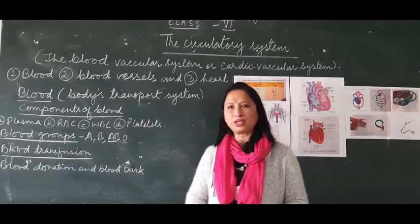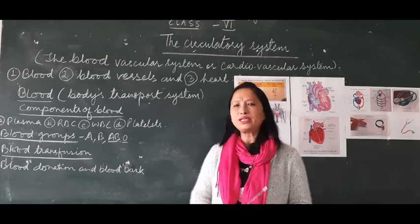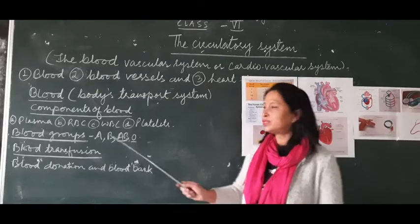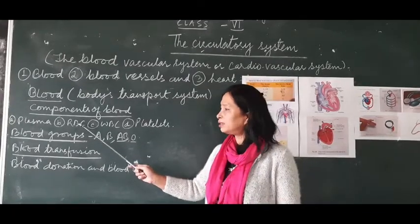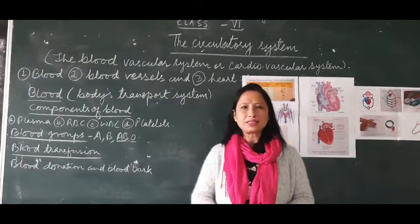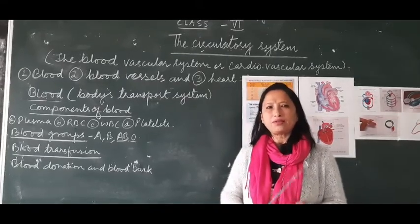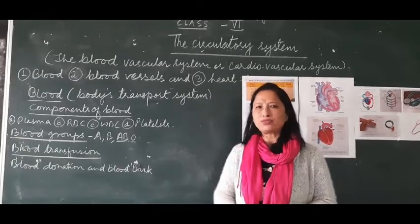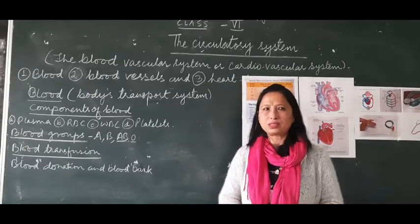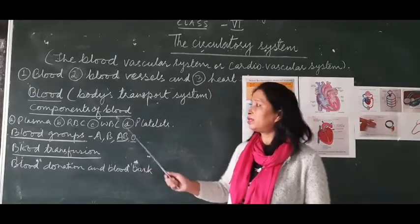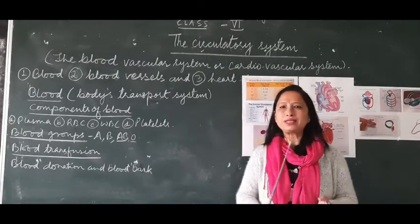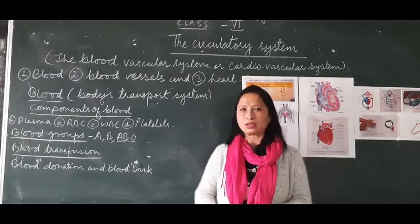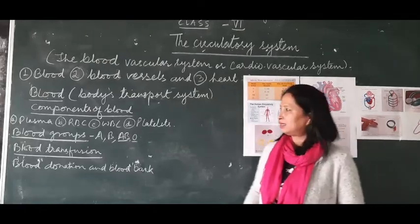Plasma is a fluid and mainly consists of water — 92 percent of it is water. RBC cells are disc-shaped, which means they are thin, flat, and round in shape, and they are formed within our bones. They are mostly filled with hemoglobin, which is an iron-containing protein that makes the blood red in color.